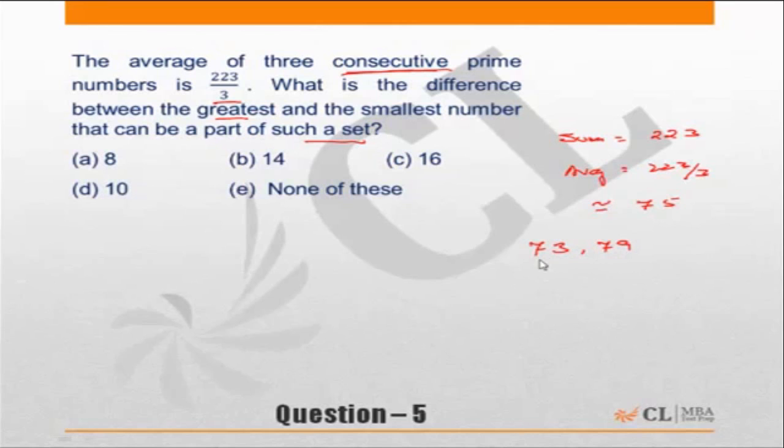73 plus 79 makes 152, so the third number should be around 70 only. Go below this - 71. So the three consecutive prime numbers are 71, 73, and 79.